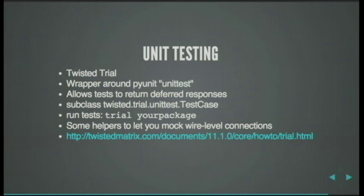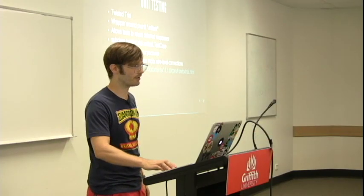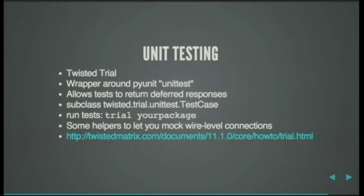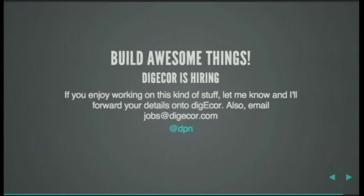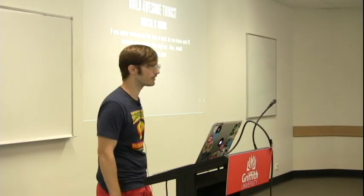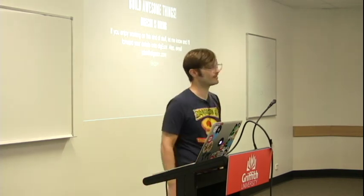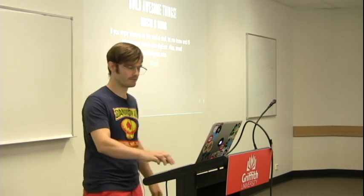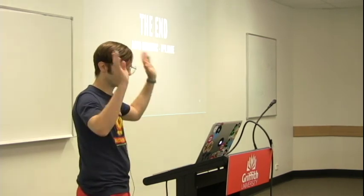Twisted has a way of unit testing where you can return deferred events from a unit test, which kind of breaks the normal pattern of not returning anything — but you actually need to do it to get the result from the deferred later. Hopefully that gives you the tools to do what you need, or at least places to look if you want to control a large Internet of Things network in Twisted. DigiCore, the company that makes this device, is also hiring — they've got offices in Brisbane and Utah, so swing them an email.